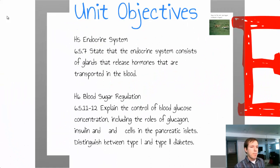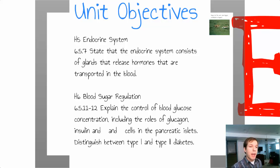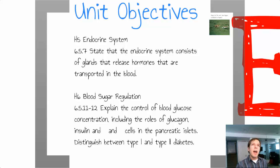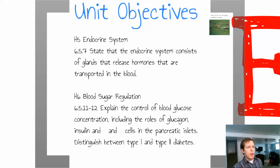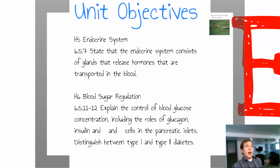The things we do need to cover today are about the endocrine system in general. You should know it is made up of glands, which are the parts that make the hormones, and those hormones are going to be transported through the blood. We'll cover specific examples of types of hormones, types of feedback including positive and negative feedback, and most significantly, blood sugar regulation — the idea of insulin and glucagon.